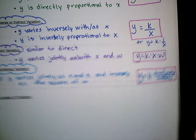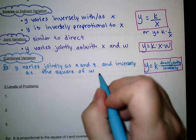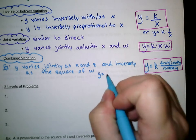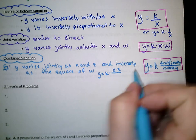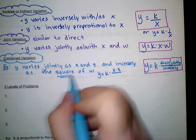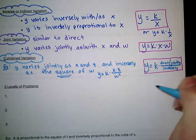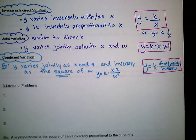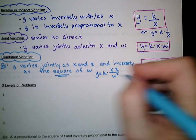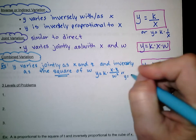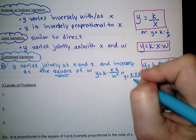For that specific example — Y varies jointly as X and Z, and inversely as the square of W — the formula is Y equals K times X times Z over W squared. Watch out: 'the square of W' means W squared, not the square root of W. That gets people frequently. We could also write it as Y equals K times X times Z over W squared.